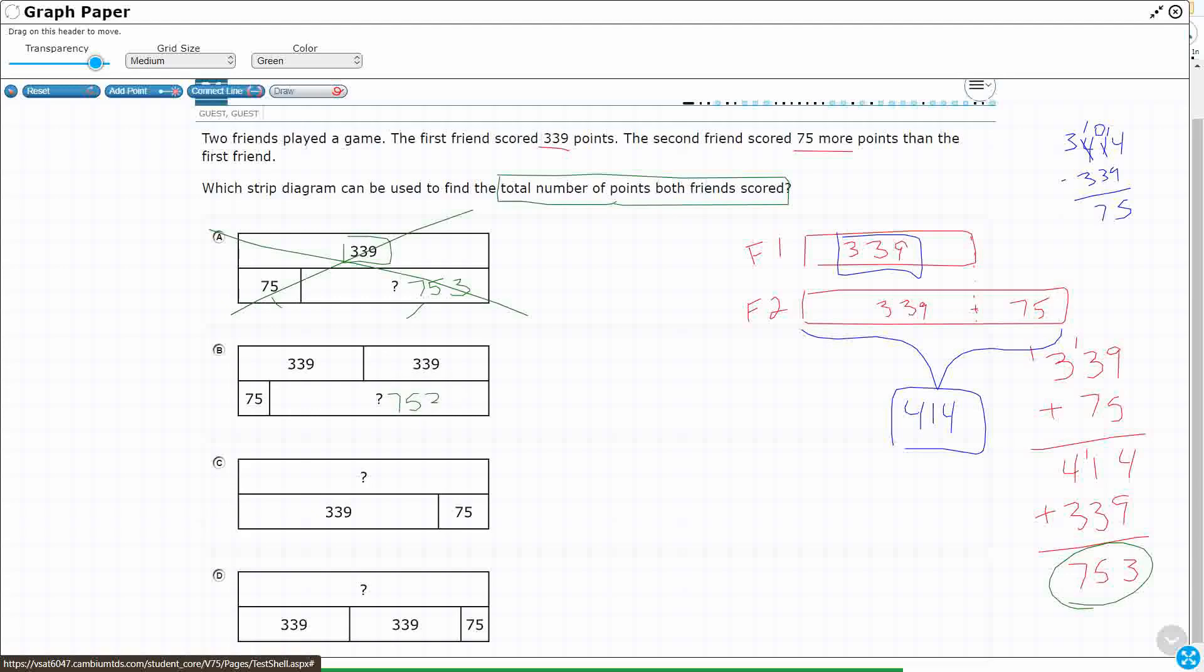All right, so 753 might plus 775 could equal those to maybe. Let's see, what is 339 added twice? That's 18, that's 6, that's 7. 678. No, look at that. 678 still isn't as large as 753. If I add 75, that's not going to work.